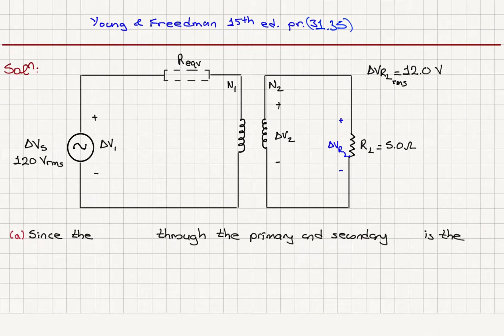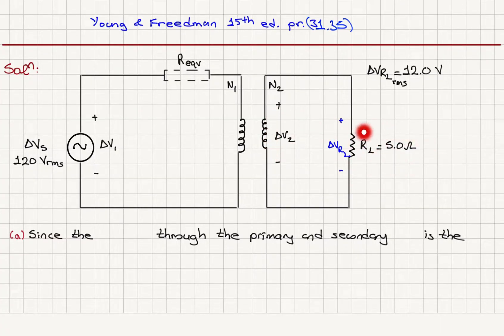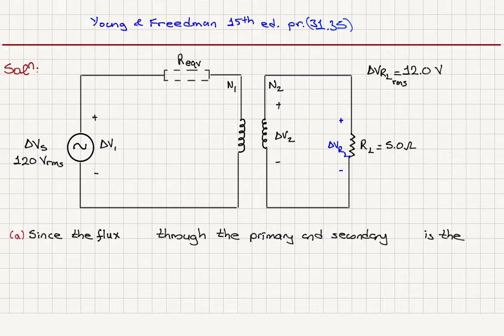Here is the equivalent circuit: the source is 120V RMS AC, with N1 windings in the primary and N2 windings in the secondary, so that the voltage appearing across the secondary coil is delta V2, which is the voltage across the load resistance of 5 ohms. We are given that this voltage is to be 12 volts. In Part A, since the magnetic flux phi_b through the primary and secondary coils is the same — there is no leakage flux in an ideal transformer.